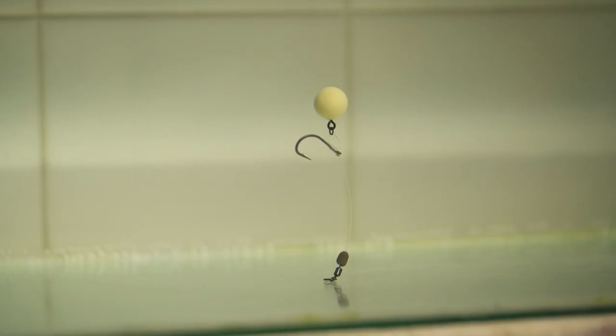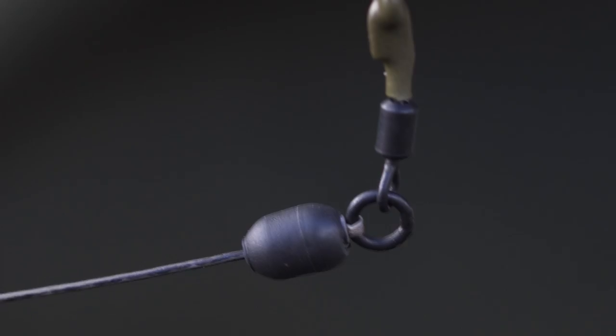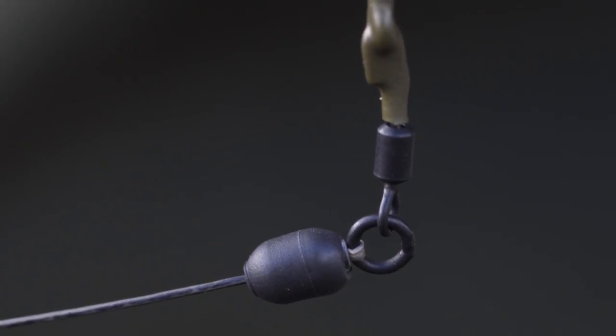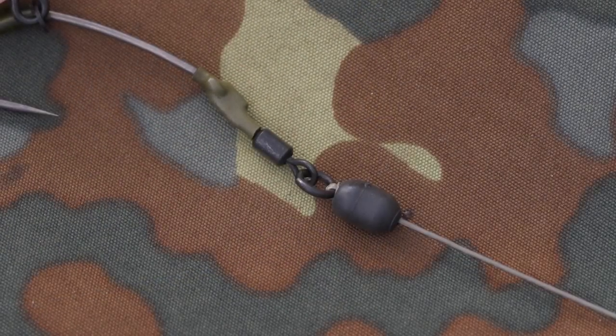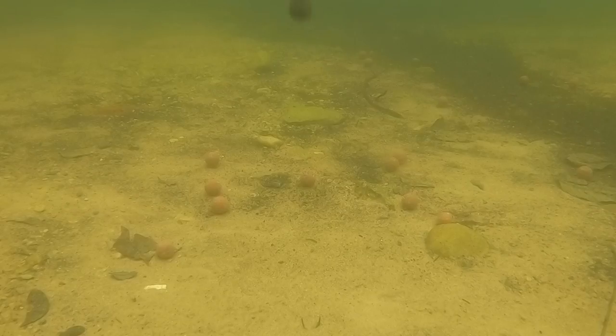The New Balance Beads are a convenient and easy to use alternative to tungsten putty, designed for balancing pop-ups on Ronnie and Hinge rigs especially. We mould the beads in our own factory and they contain 75% tungsten powder, making them very dense and heavy.